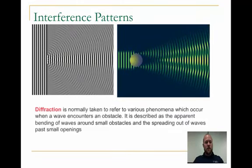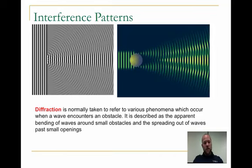Diffraction happens in a variety of different ways. It's normally taken to refer to various phenomena which occur when a wave encounters an obstacle. So over on the left you see waves passing through an opening. And on the right here you see waves bending as they go around an obstacle.